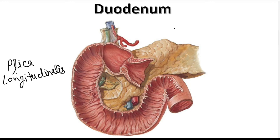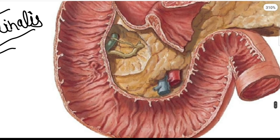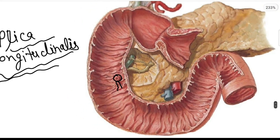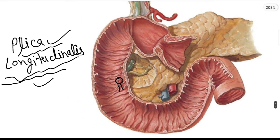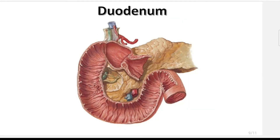Another structure to observe is the plica longitudinalis. Just below the major duodenal papilla there are longitudinal folds, and these folds are known as the plica longitudinalis. These features of the first and second parts of the duodenum are very important.